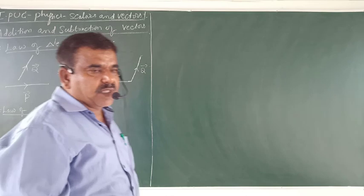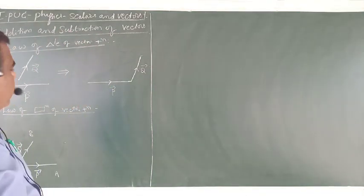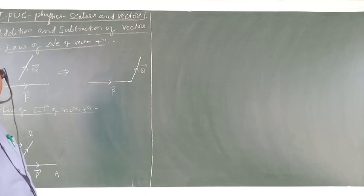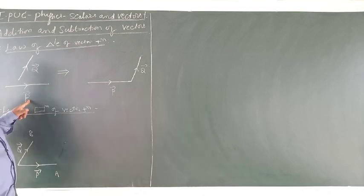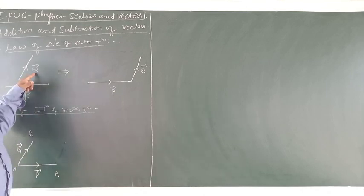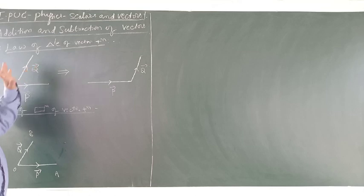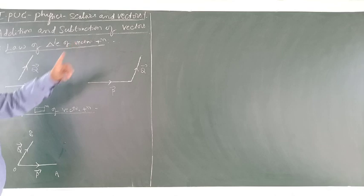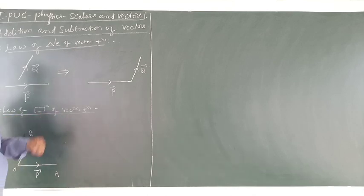In this session we shall learn vector operation. Vector operation means how to add two vectors — addition of two vectors. P is one vector, Q is another vector. We want to add these two vectors, that is vector P plus vector Q. Vector addition is based on the following two very important laws: the law of triangle of vector addition and the law of parallelogram of vector addition.